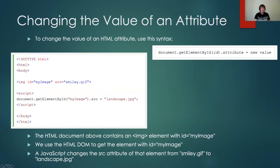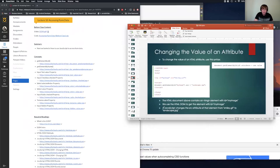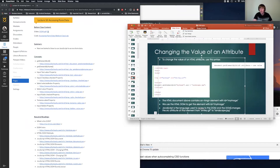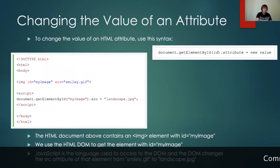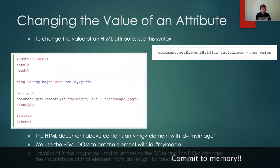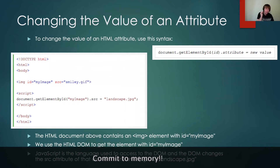So on an exam, I'm writing what is actually happening here. If I wanted to say this crystal clear, I'd say: JavaScript is the language used to access the DOM, and the DOM changes the source attribute of that element from smiley.gif to landscape.jpg. This would be the better way to say it in order to get a hundred percent on the exam. JavaScript is the language used to access the DOM, and the DOM changes the source attribute of that element from smiley.gif to landscape.jpg. Remember this — you're going to be tested on this on an exam.